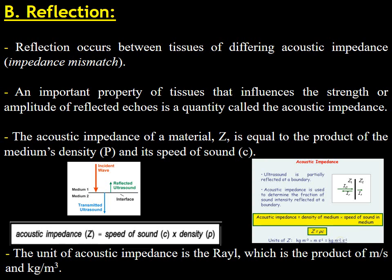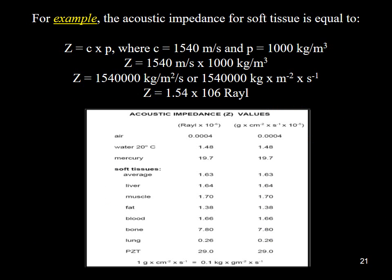A material's acoustic impedance is equal to the product of its density and the speed of sound in the medium. The rayl, which is the product of meters per second and kilograms per cubic meter, is the SI unit for acoustic impedance. The attached illustration, accompanied by a mathematical example, depicts the various values of acoustic impedance depending on the type of medium with which the ultrasound waves interact.